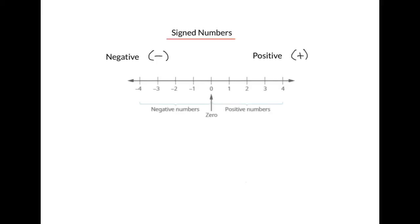We can show sign numbers on a number line, where 0 separates the positive numbers to the right of 0 from the negative numbers to the left of 0. As an example, negative 4 occupies a certain spot on the number line and has a sign and a value.